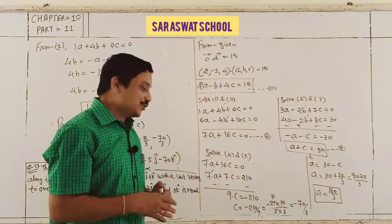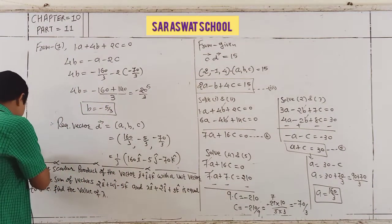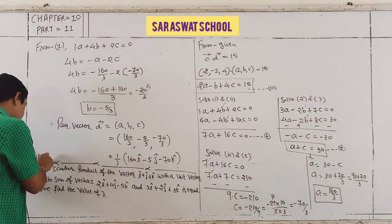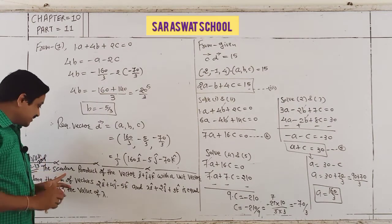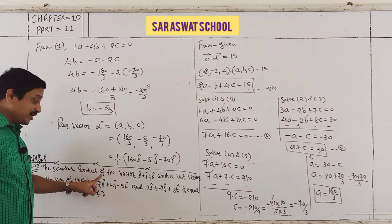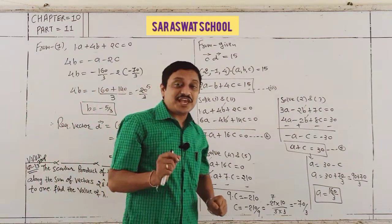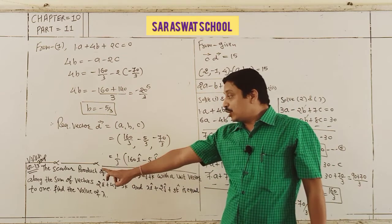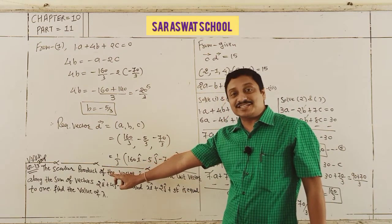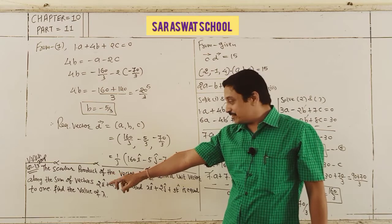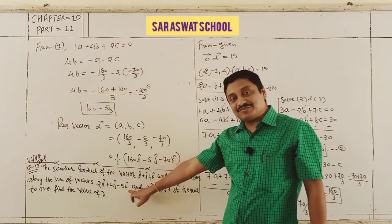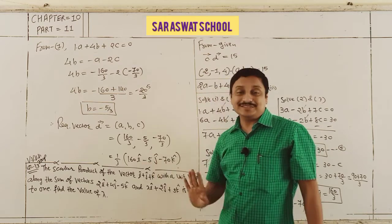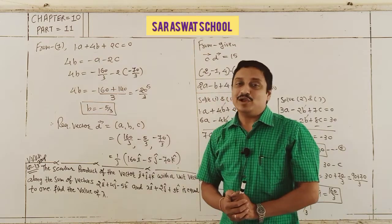Now continuing to Question 13. This is also very, very important at exam level. The question is: the scalar product of the vector i + j + k with a unit vector along the sum of the vectors 2i + 4j − 5k and λi + 2j + 3k is equal to 1. Find the value of λ.